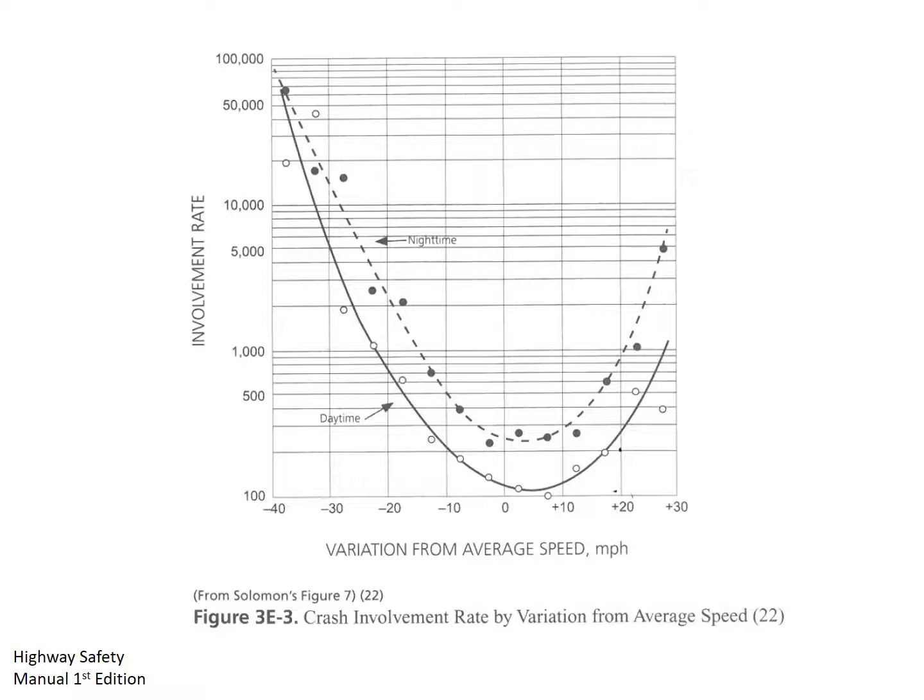The curve shown in this graph was created by David Solomon based on research related to comparisons between a vehicle's speed and the average speed of other vehicles, which is shown on the y-axis, and their crash rates, which is shown on the x-axis. This graph was developed based on 10,000 crashes, and the general relationship has been confirmed by other researchers.